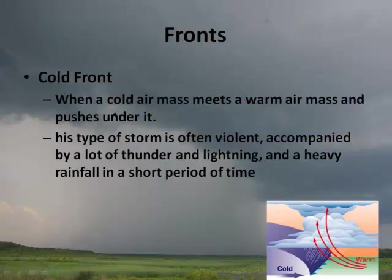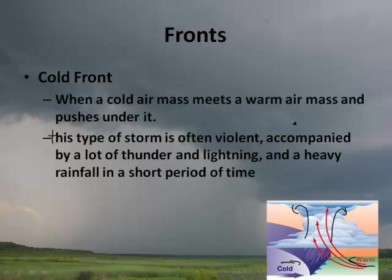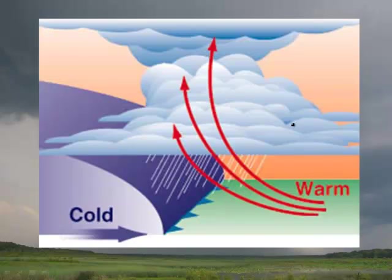Here's maybe a better picture of an air front coming through. Now there's different kinds of fronts. There's the cold front — you've probably heard of that on the Weather Channel. When a cold air mass meets a warm air mass, it pushes under it. This type of storm is often violent, accompanied by a lot of thunder, lightning, and heavy rainfall. You get a warm front and a cold front, the warm air rises, and we can get a convection cell going — that's where we get lots of very violent weather. So that's a cold front.